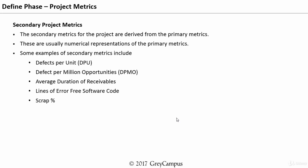We now talk about the secondary project metrics. The secondary metrics for the projects are derived from the primary metrics. In the primary metrics, maybe we have identified that quality is a problem, but how we are going to measure quality for a particular project we may not be very clear. The secondary metrics will help you to identify how you are going to measure the quality.